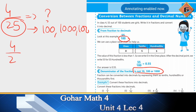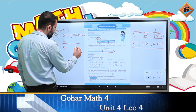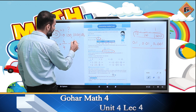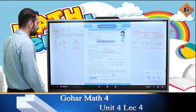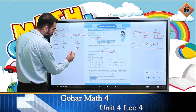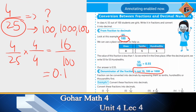4/25 को हम 4 से multiply करेंगे — नीचे वाले को multiply करें तो ऊपर वाले को भी करना पड़ेगा। 25 × 4 = 100 और 4 × 4 = 16, तो 4/25 = 16/100। अब 1 जो है वो 10th place पे है और 6 जो है वो 100th place पे, यानि इसको decimal में 0.16 लिख सकते हैं।